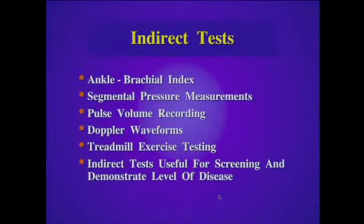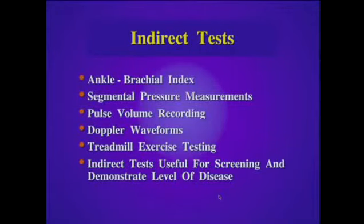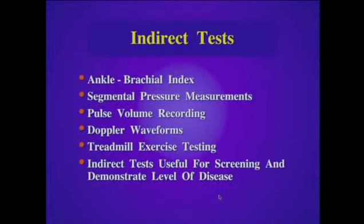There are a number of indirect tests that can be used for the evaluation of the peripheral arteries. The ankle brachial index is very sensitive and easily performed. We also employ segmental pressure measurements, pulse volume recordings, and Doppler waveforms in our evaluation. Treadmill exercise testing can be helpful for evaluation of patients with claudication, as this stress test can help bring out disease that may not be identified at resting pressures. Indirect tests are useful for screening and demonstrate the level of disease for further evaluation with ultrasound.